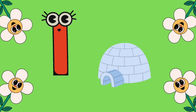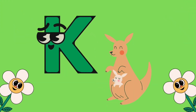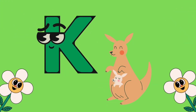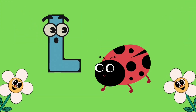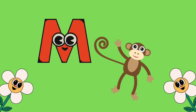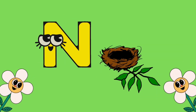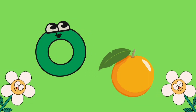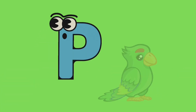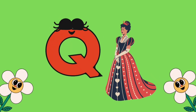I is for igloo, J is for jam, K is for kangaroo, L is for ladybug, M is for monkey, N is for nest, O is for orange, P is for parrot.